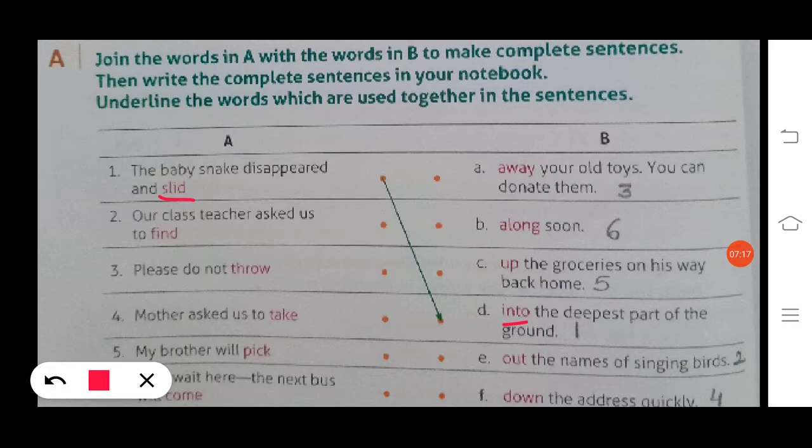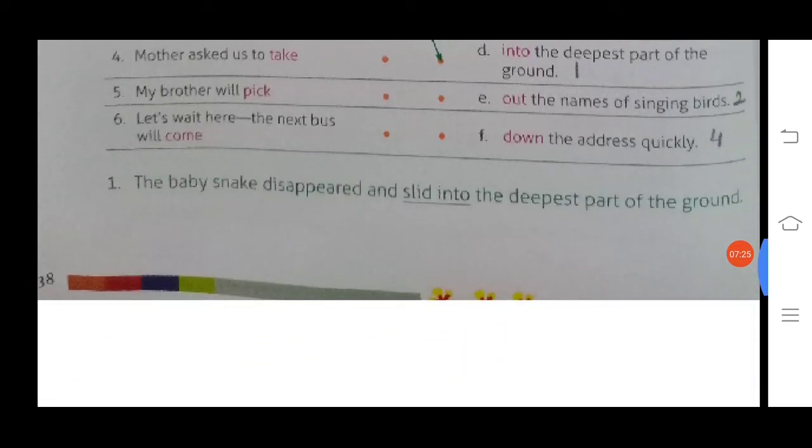It will be matched with D, and then we have to write it together and underline the red part—slid into. The first point is given: the baby snake disappeared and slid into the deepest part of the ground, so slid into goes together.